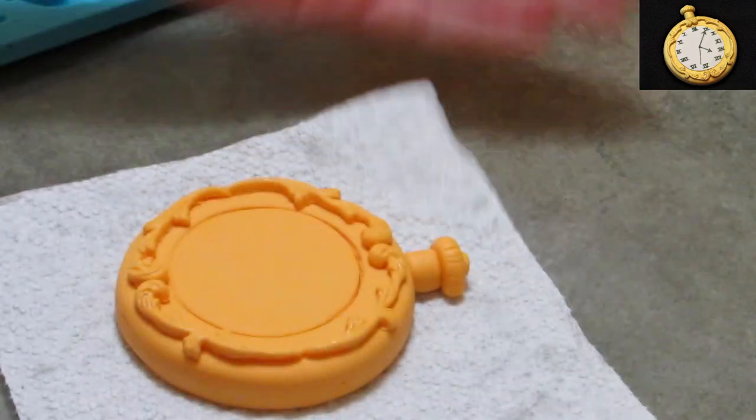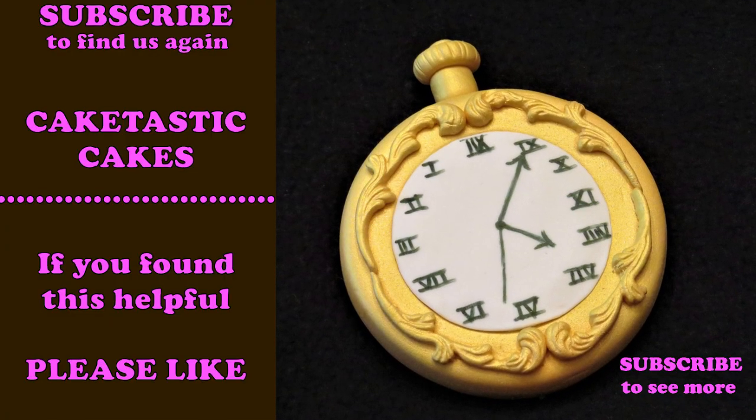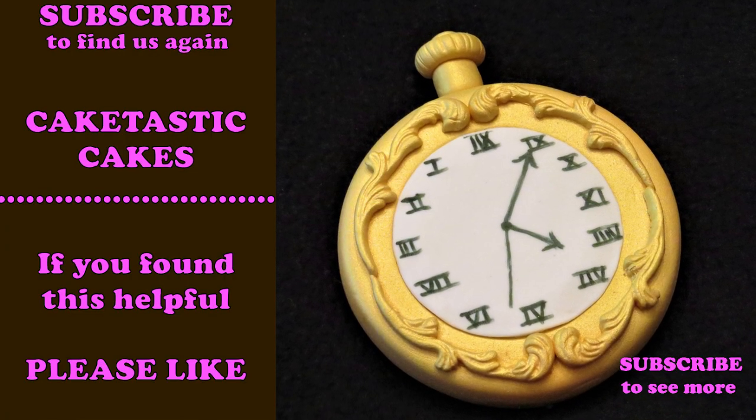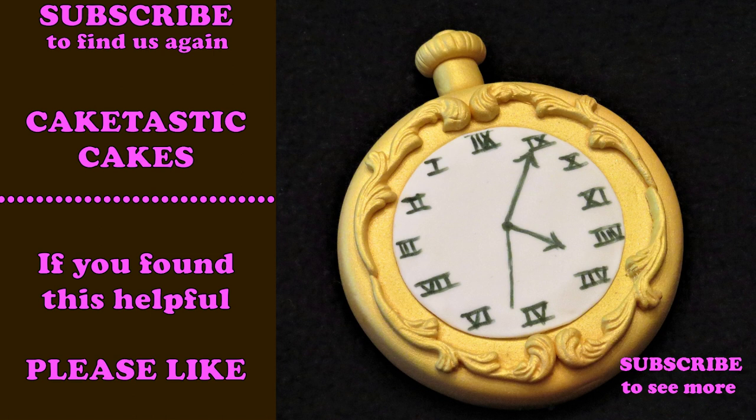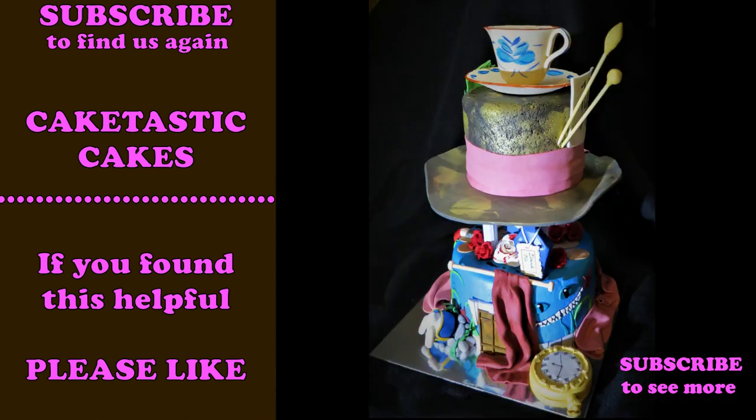I ended up spray painting the whole thing with edible gold glitter. And then roll out some white nice and thin and make the face of your watch. This is Alice in Wonderland, so you can see the numbers are all backwards and messed up. Normal pocket watch, have normal numbers, whatever you want. But there you go. It looks really cool and it's easy.